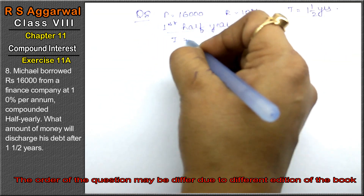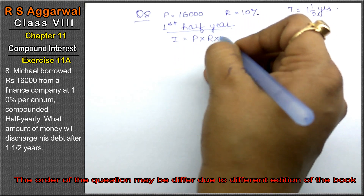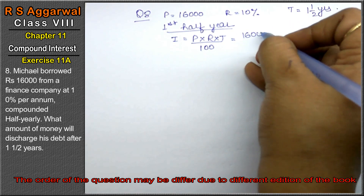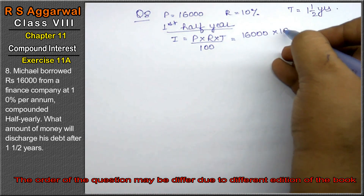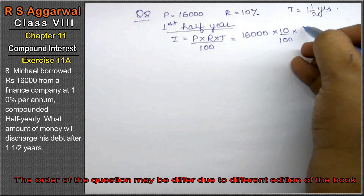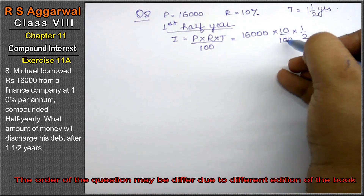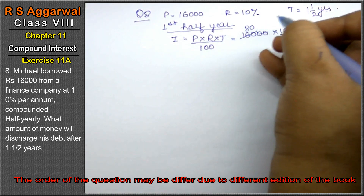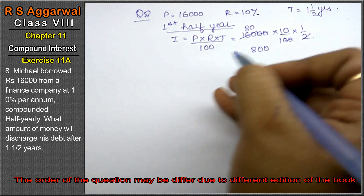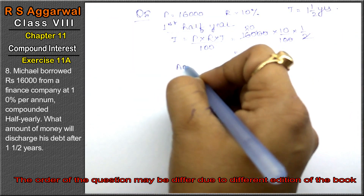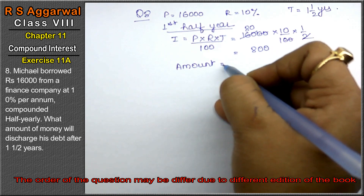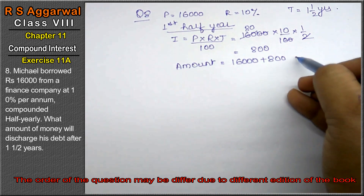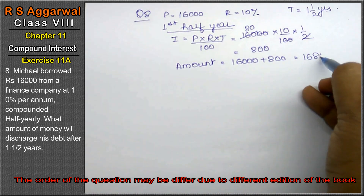First half year interest: formula is P into R into T upon 100. P is 16,000, R is 10%, T is half year. After cancelling, we get 800. Amount equals 16,000 plus 800, that is 16,800.